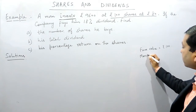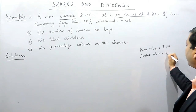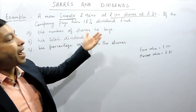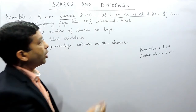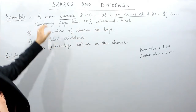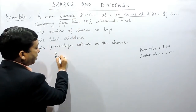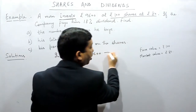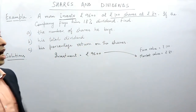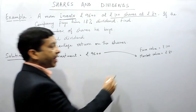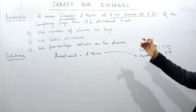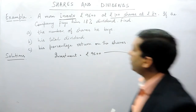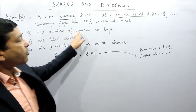Now the market value of the share is rupees 80. There are various factors on which the market value depends. When he is investing rupees 9,600, he is purchasing each share for rupees 80, not rupees 100. But because the face value is rupees 100, the company will pay the dividend on rupees 100, not on rupees 80.